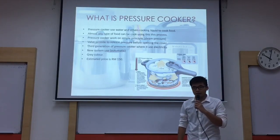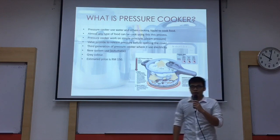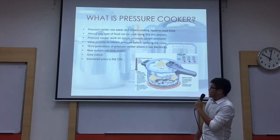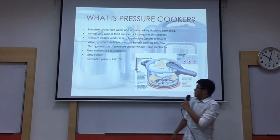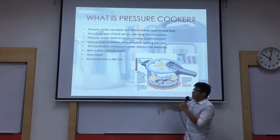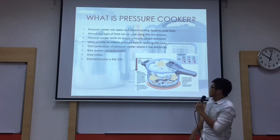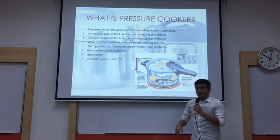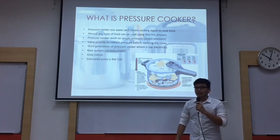First, we go to the introduction part. What is a pressure cooker? A pressure cooker is a cooker that uses water and other liquid in order to cook food. So almost any type of food can be cooked using a pressure cooker. This pressure cooker works on a simple principle, which is steam pressure. We have provided a valve at the cover in order to release the pressure. This valve has been provided to release the pressure before opening the cover — when you release it, then it's safe to open. This pressure cooker uses electricity, which is the third generation of pressure cooker.